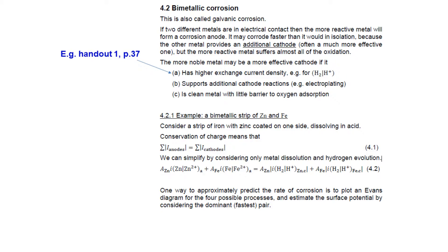A third factor: if the more noble metal is clean, it can provide a very effective cathode reaction with no barrier to mass transport. In corrosion driven by dissolved oxygen, lots of oxygen can reach the clean noble metal surface and the balancing reaction is dissolution of the more reactive metal. On its own, the more reactive metal might have been covered by dirt or corrosion products, limiting oxygen supply and causing quite slow active corrosion.